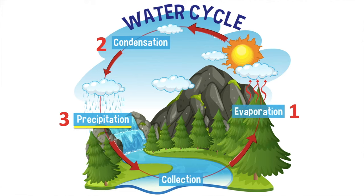When the water falls as rain, hail or snow, it's collected in lakes, rivers and seas. This is the complete water cycle. The cycle then starts all over again.